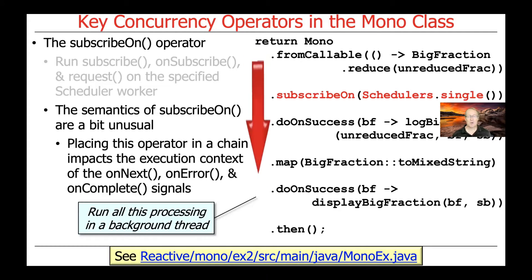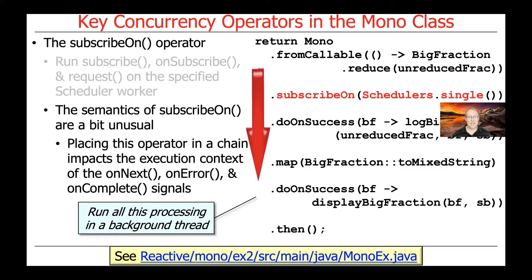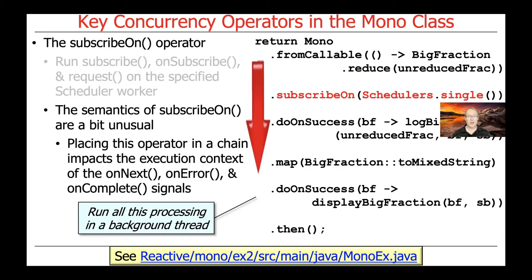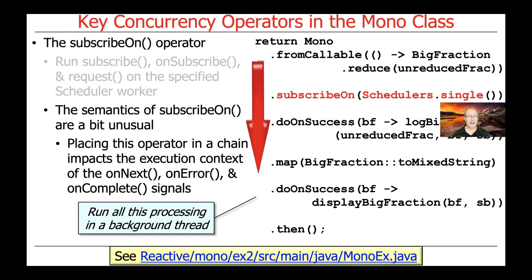As you can see in this particular example, we start by saying mono.fromCallable to get an unreduced big fraction and reduce it. Then we call subscribeOn, passing in schedulers.single, which is going to run in a single background thread. What's interesting is that when subscribeOn is seen, it causes everything in the chain — starting from mono.fromCallable all the way to the end, in this case the then method — to run in that background thread.